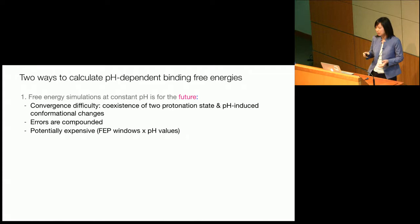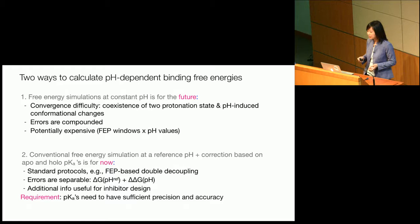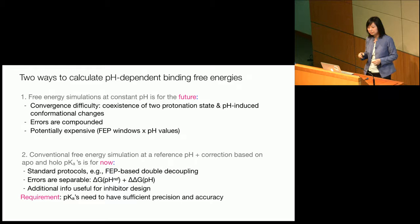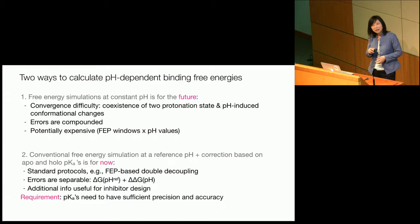The simple and cheap approach I'm going to propose is to run a conventional FEP calculation at a reference pH, and then add a free energy correction based on two sets of pK values — the apo state and the holo state. By doing this, we can rely on the standard protocol that's already been validated for accuracy. We know the errors can be separated: if we have errors on one side, we know the error bar. We can also have error bars for our pK calculations and get additional useful information for inhibitor design.